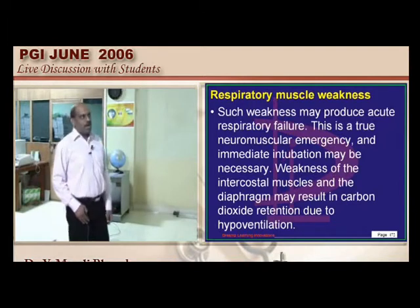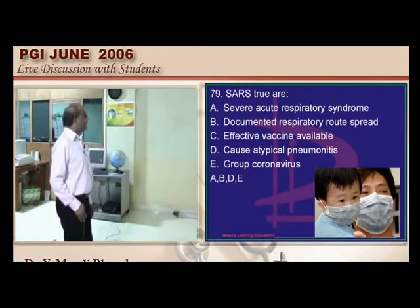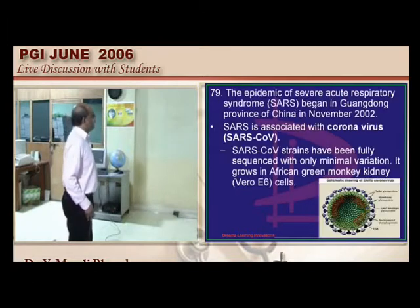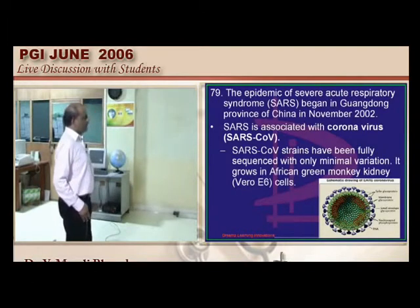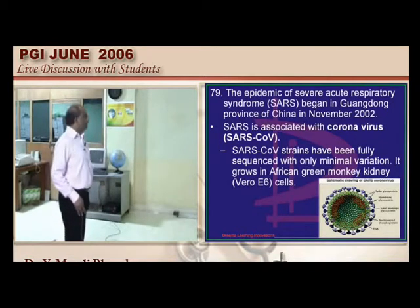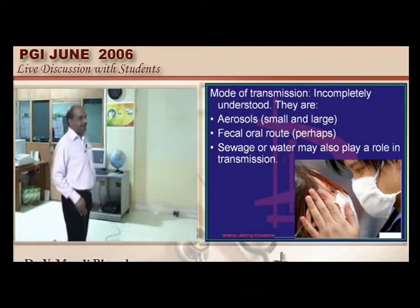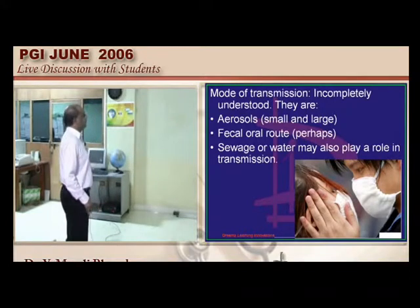SARS is caused by the coronavirus, which has a characteristic shape with membrane glycoproteins and spikes. Aerosols are the most common transmission method; fecal-oral and sewage/water routes were also considered. The patient presents with acute respiratory distress.